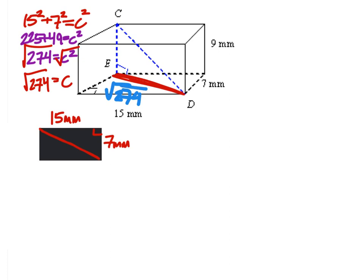That's that diagonal right here, so now I can draw that right triangle, knowing that that bottom part is the square root of 274.